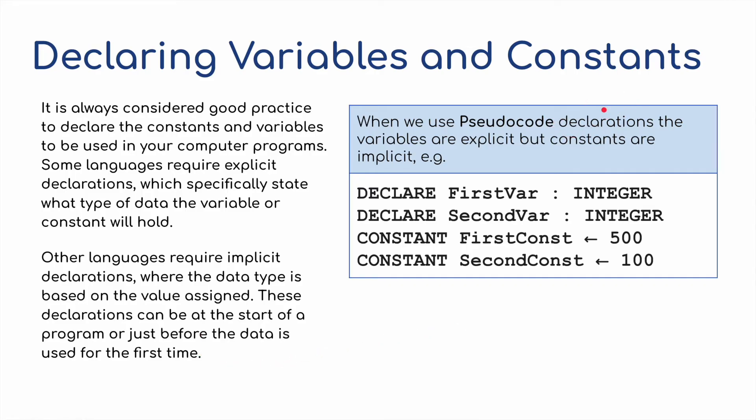Now, in pseudocode, we would write declarations for variables, such as just using the word declare, and for constants would use the word constant, so we can tell the difference between the two. For example, here, I've assigned an integer value to my first and second variable, whereas the constant has been assigned, and this is what the arrow is about, it's been assigned a permanent value of 500 for the first constant and 100 for the second constant.